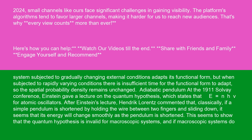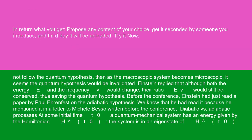At the 1911 Solvay Conference, Einstein gave a lecture on the quantum hypothesis, which states that E equals n*h*nu for atomic oscillators. After Einstein's lecture, Hendrik Lorentz commented that classically, if a simple pendulum is shortened by holding the wire between two fingers and sliding down, its energy will change smoothly as the pendulum is shortened. This seems to show that the quantum hypothesis is invalid for macroscopic systems. Einstein replied that although both the energy E and the frequency nu would change, their ratio E/nu would still be conserved, thus saving the quantum hypothesis.